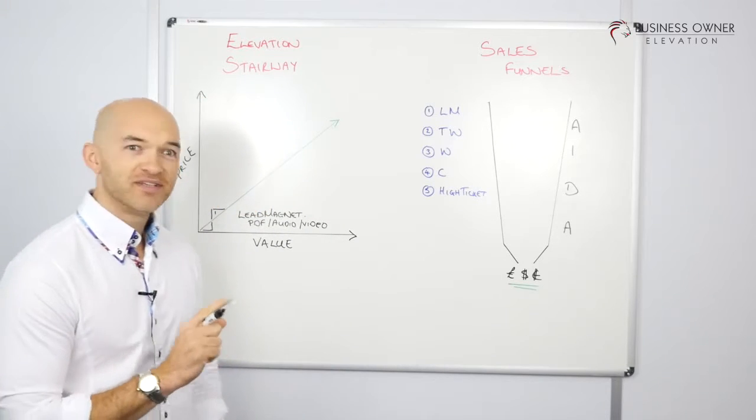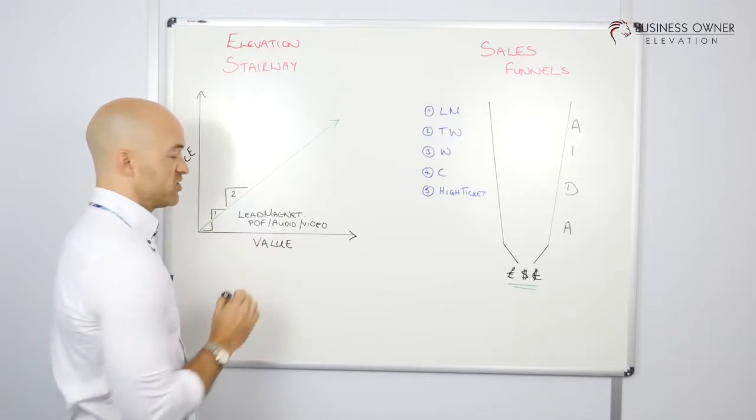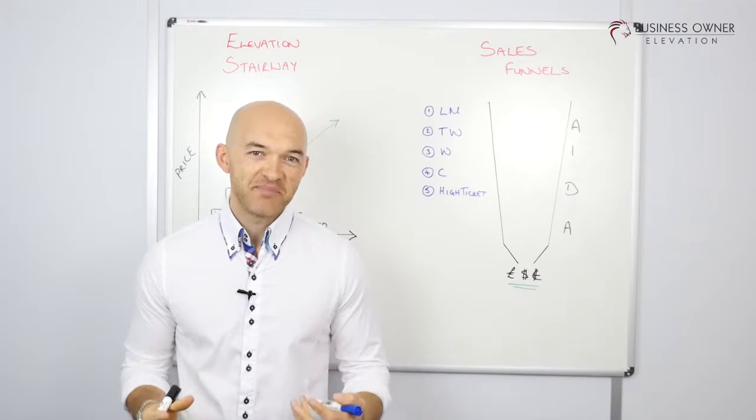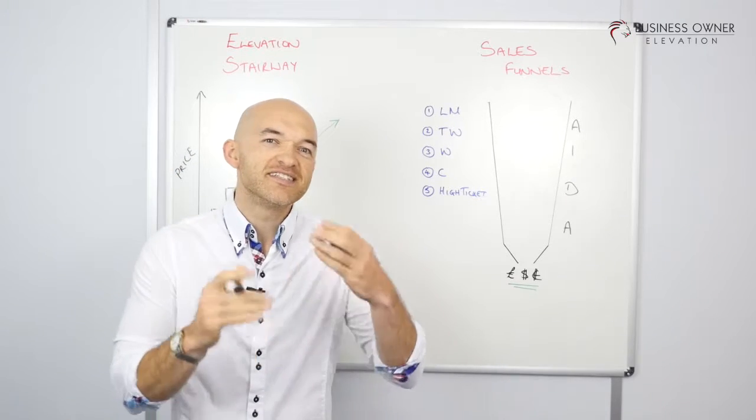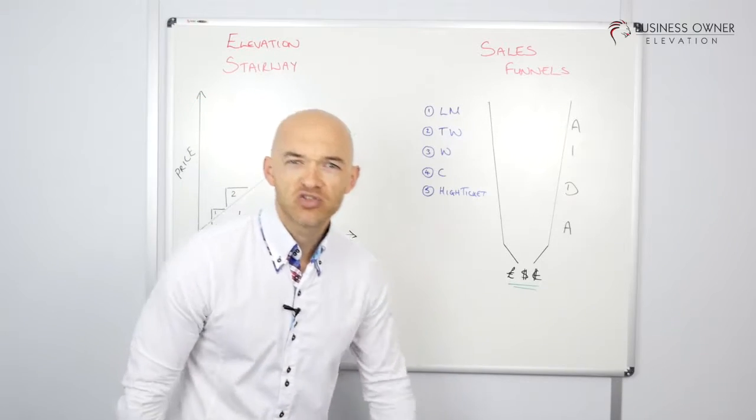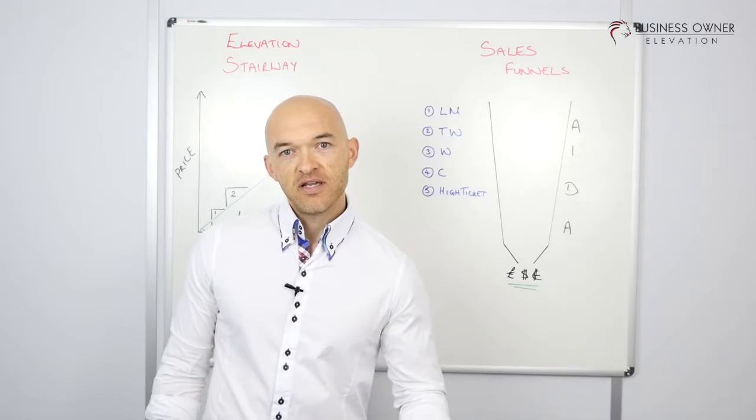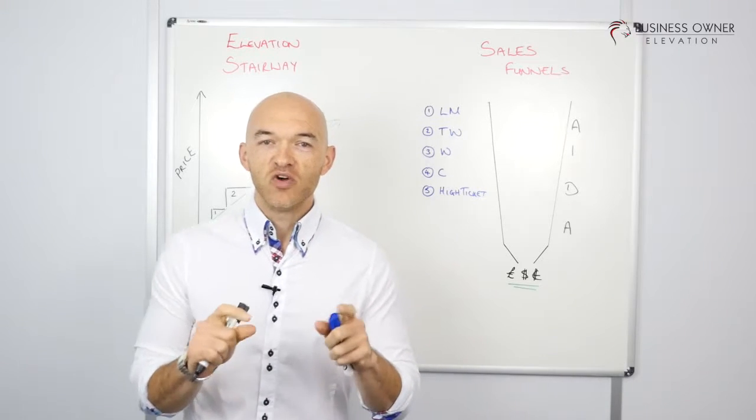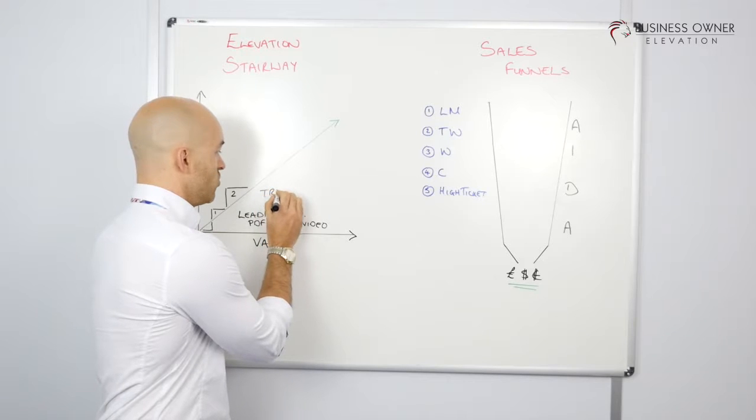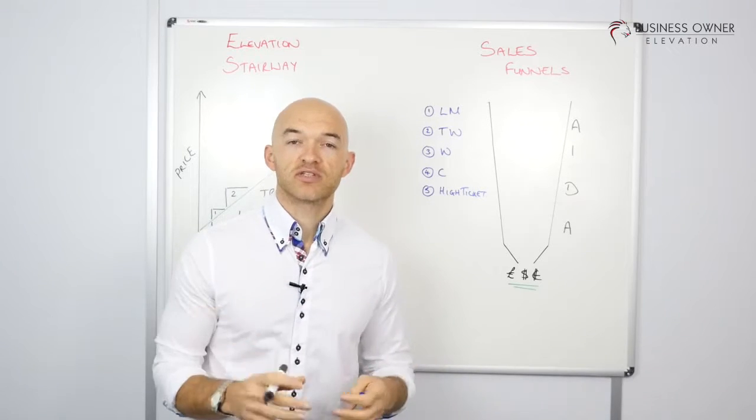Now what we need to do is move into the next step, number two, our tripwire. At this point where somebody has downloaded your lead magnet, we need to give them a tripwire. We need to give them something to actually fall over. A tripwire is all about offering a low-priced product.